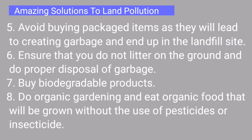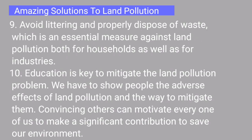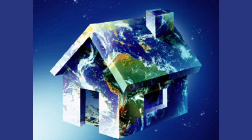Buy biodegradable products, do organic gardening, and eat organic food grown without pesticides or insecticides. Avoid littering and properly dispose of waste — these are essential measures against land pollution for both households and industries. The key to mitigating land pollution and all forms of pollution is education and awareness among the masses. We have to show people the adverse effects of land pollution and the ways to mitigate them. Convincing others can motivate everyone to make a significant contribution to save our environment. Earth is the only planet where we can survive — it is our home, and we must save it.